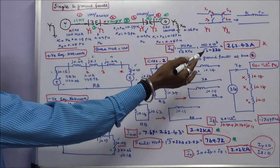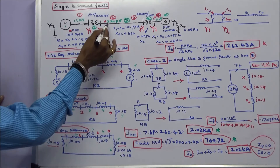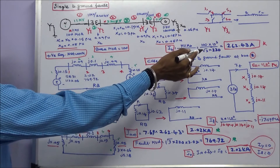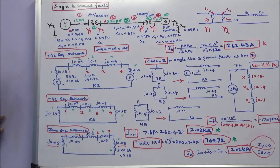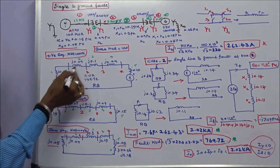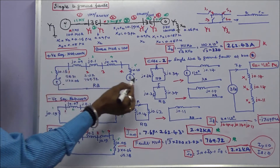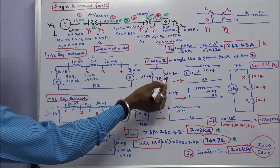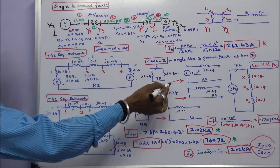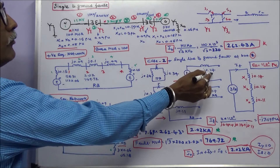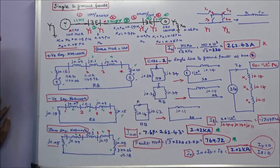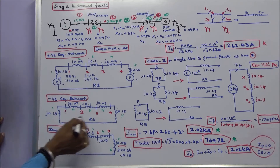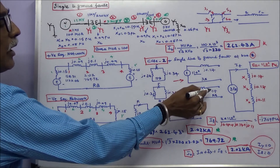Case 2: single line-to-ground fault at bus 2. The voltage is 220 kV. Base current equals 100 times 10³ divided by root 3 times 220, giving 262.43 amps. With fault at this point, the reactance on one side is j0.15 plus j0.010, equaling j0.24 (note: likely j0.25). The other side reactance is j0.1 plus j0.010 plus j0.15, equaling j0.34 (note: likely j0.25). The positive sequence equivalent Thevenin reactance is j0.14. Prefault voltage is 1.0. Removing sources gives negative sequence network with equivalent Thevenin reactance j0.14.